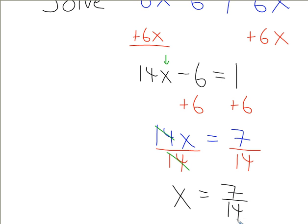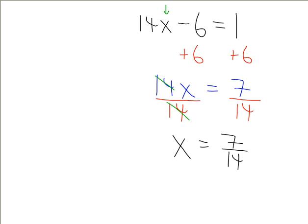Of course, 14 is too big to really divide into 7. But there is one thing that we can do with this result. We can reduce the fraction. So how can we reduce this fraction? Well, we can divide a 7 out of both the top and bottom of this fraction.